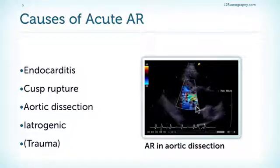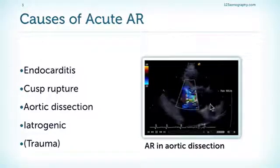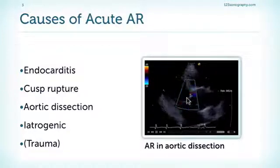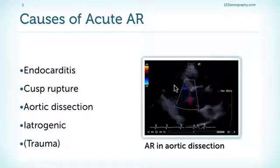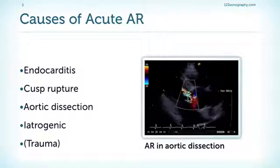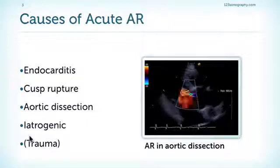We can see a dissection membrane here in the aortic root, and this dissection membrane causes a malfunction of the aorta and severe aortic regurgitation with a very broad jet and a very large flow-convergence zone.